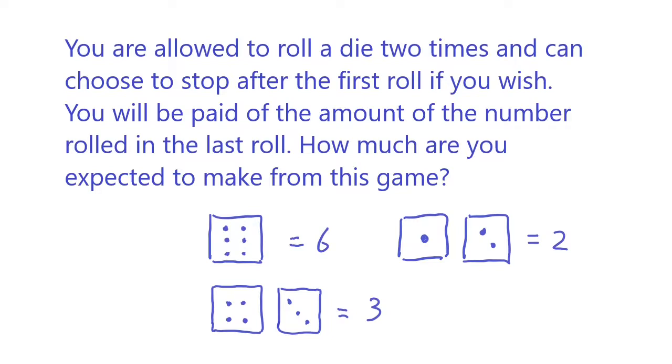So for example, if I roll a six and I decide to stop, I'll get paid six dollars. And if I roll a one and then I roll a two, then I'm going to get two dollars. If I roll a four, at this point if you stop I will get four dollars, but I decided to roll again in which case I got a three. At the end, I'm only going to get three dollars.